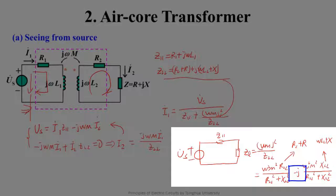It should be noted that there is a minus sign in the reflected impedance — it changes the reactance properties of the secondary side. If the secondary side is inductive, it appears capacitive seen from the primary side, and vice versa. This means we can use the air core transformer for impedance matching to achieve maximum power transfer. Since Z11 must be inductive, if the imaginary part of Z22 is positive (inductive), the minus sign of the reflected impedance means the imaginary parts of Z11 and ZL may have the same magnitude and opposite signs, realizing a conjugate match and achieving maximum power transfer.